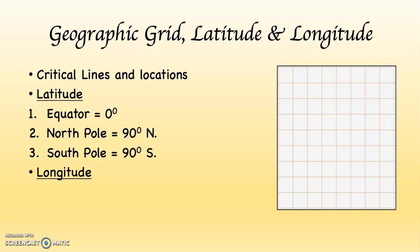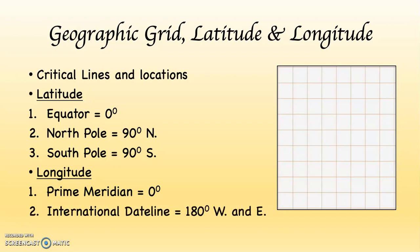The other part of the geographic grid is longitude. Longitude has two significant locations or lines to start with. The prime meridian, which is zero degrees — this is where we begin counting with longitude. And the international dateline, which is found at 180 degrees west or east. Those are both the same place, halfway around the planet from the prime meridian.